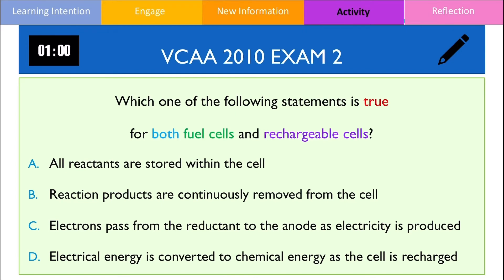In this question, we want to select the true statements about both fuel cells and rechargeable cells. Part A of this question is going to be incorrect because we know that fuel cells require reactants to be continually supplied into the cell, so A is out of question. Part B of this question is also incorrect because in a secondary cell when it's recharging, we need the products to remain there in order for the reverse reaction to occur, so B is also incorrect. We could also eliminate option D because we know that fuel cells do not have the capacity to recharge at all. As a result, C is going to be the correct answer.